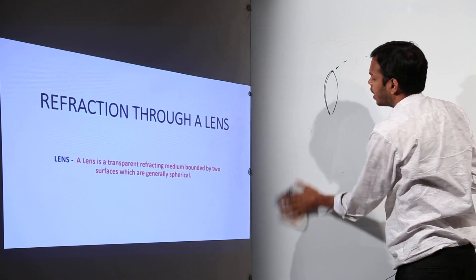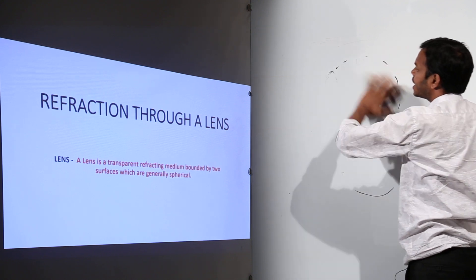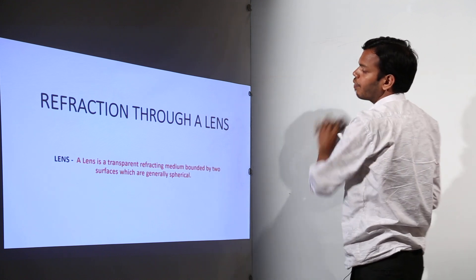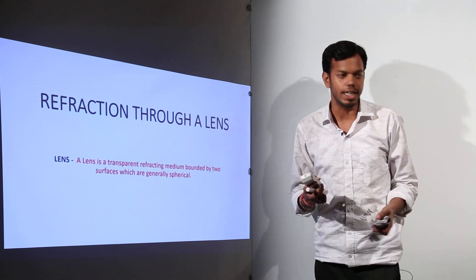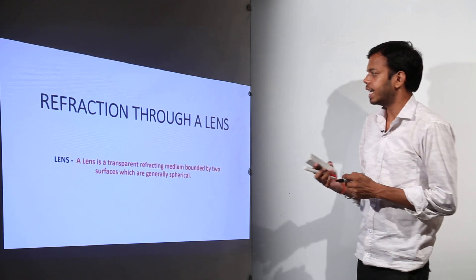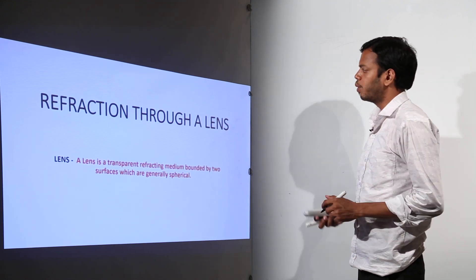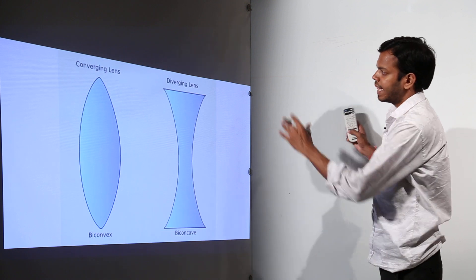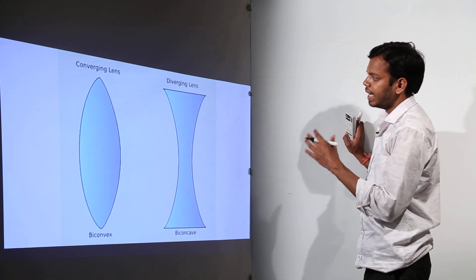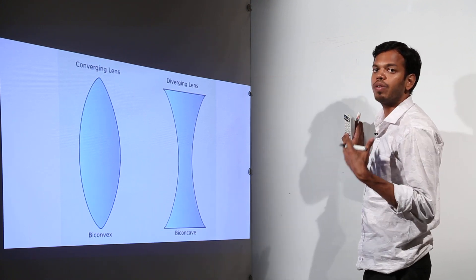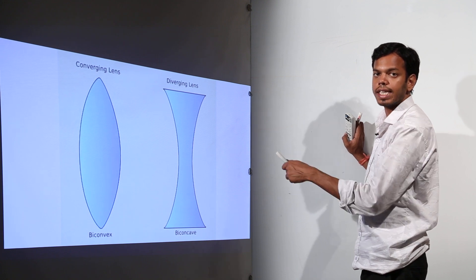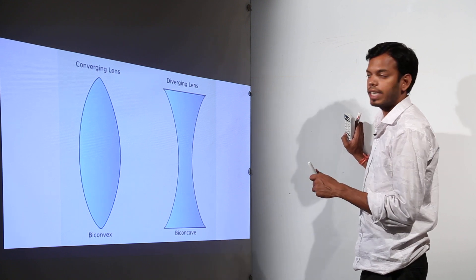It is not a mandatory condition that both curvatures should be of equal radius. This is a converging lens and another one is a diverging lens, which we also know by the names convex and concave lens.